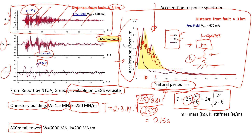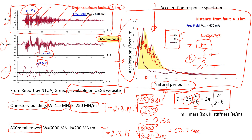For the 800-meter tower, we use the same formula with a weight of 6,000 MN and a stiffness of 200 MN/m, giving a natural period of approximately 10.9 seconds.